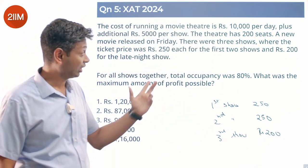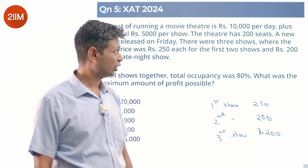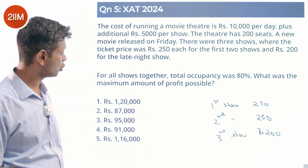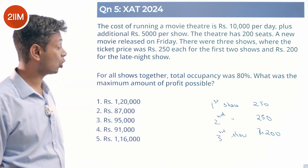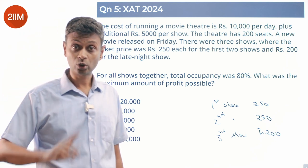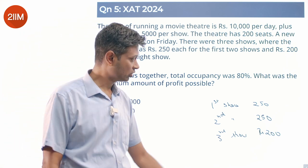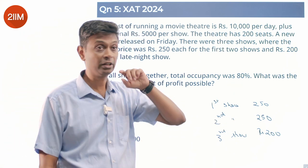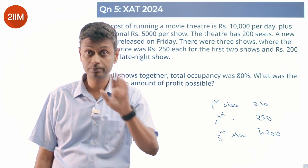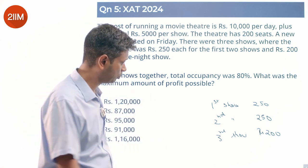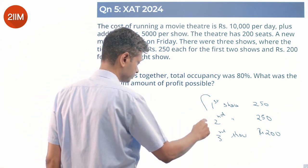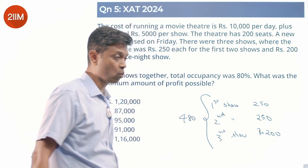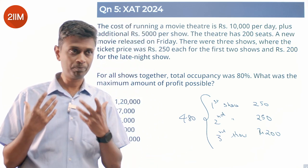For all shows together, the total occupancy was 80 percent — that is 600 into 80, which is 480. All put together, 480 people watched the shows.